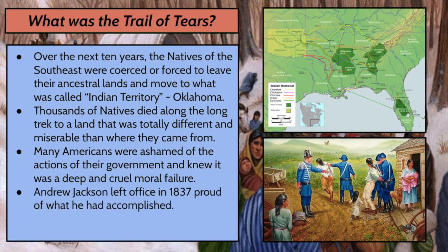Andrew Jackson left office in 1837. He was very proud of what he had accomplished, but for rather obvious reasons he is still controversial to this day. He happens to be one of President Trump's favorite presidents — in fact, behind Trump's desk in the Oval Office is a painting of Andrew Jackson. Many people would actually like to have him removed from the $20 bill because of his legacy with the Indian Removal Act. He is a controversial figure in American history for rather obvious reasons.